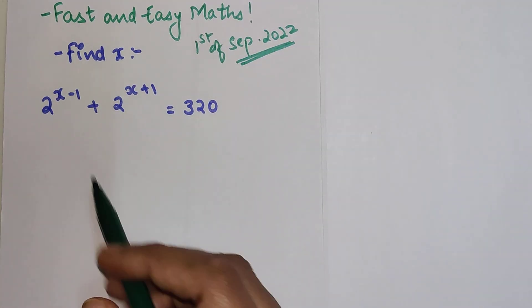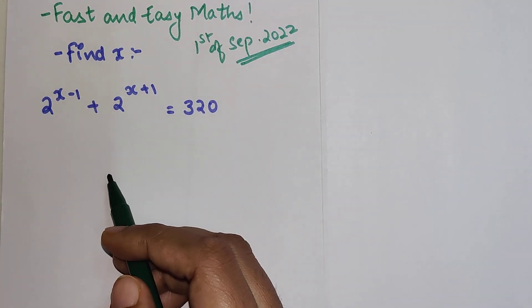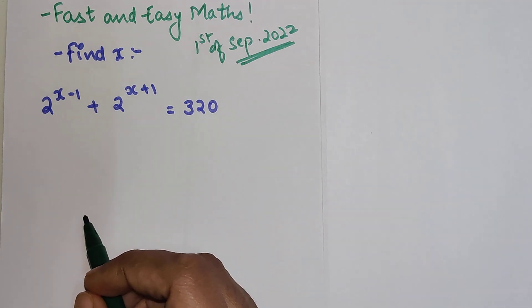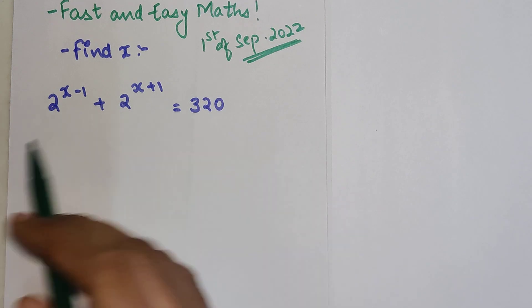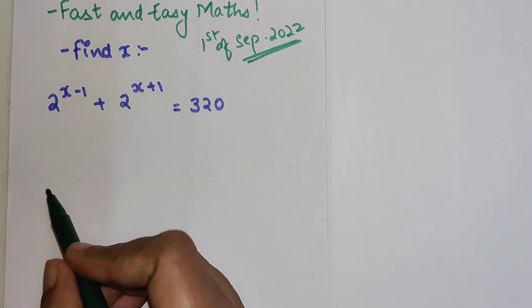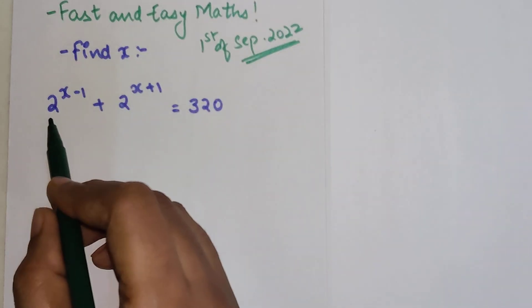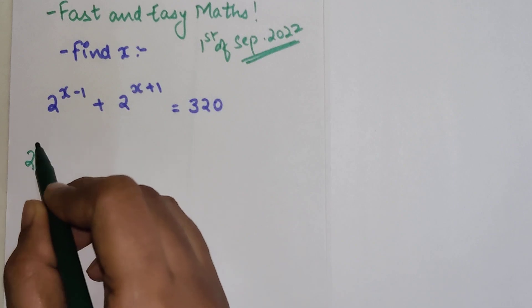Let's quickly try and solve how to find the value of x for this particular equation. So you can see what you can do is take something which is common. So here I can say that out of these two, 2 raised to x minus 1 will be the smaller one.